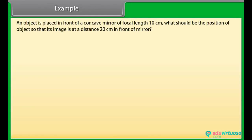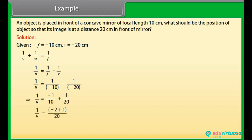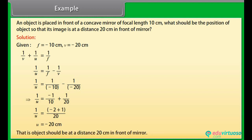Example: An object is placed in front of a concave mirror of focal length 10 cm. What should be the position of the object so that its image is at a distance 20 cm in front of the mirror? Solution: Given f = −10 cm, v = −20 cm. Using 1/v + 1/u = 1/f, we get 1/u = 1/(−10) − 1/(−20) = −1/10 + 1/20 = (−2+1)/20 = −1/20. Therefore u = −20 cm, meaning the object should be placed 20 cm in front of the mirror.